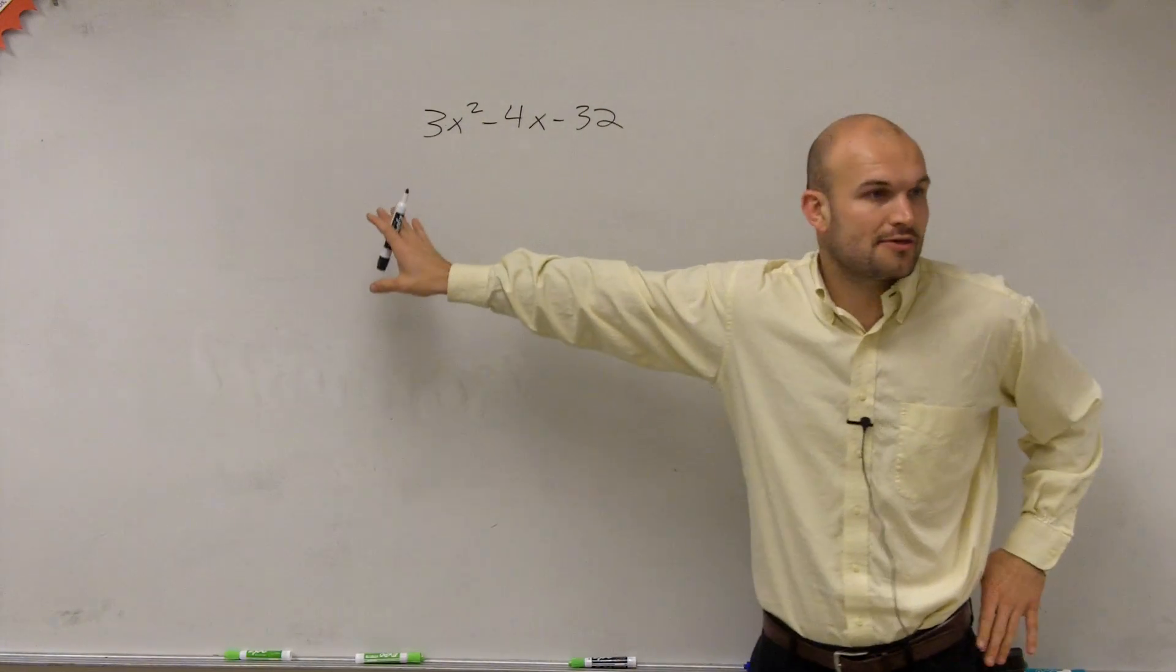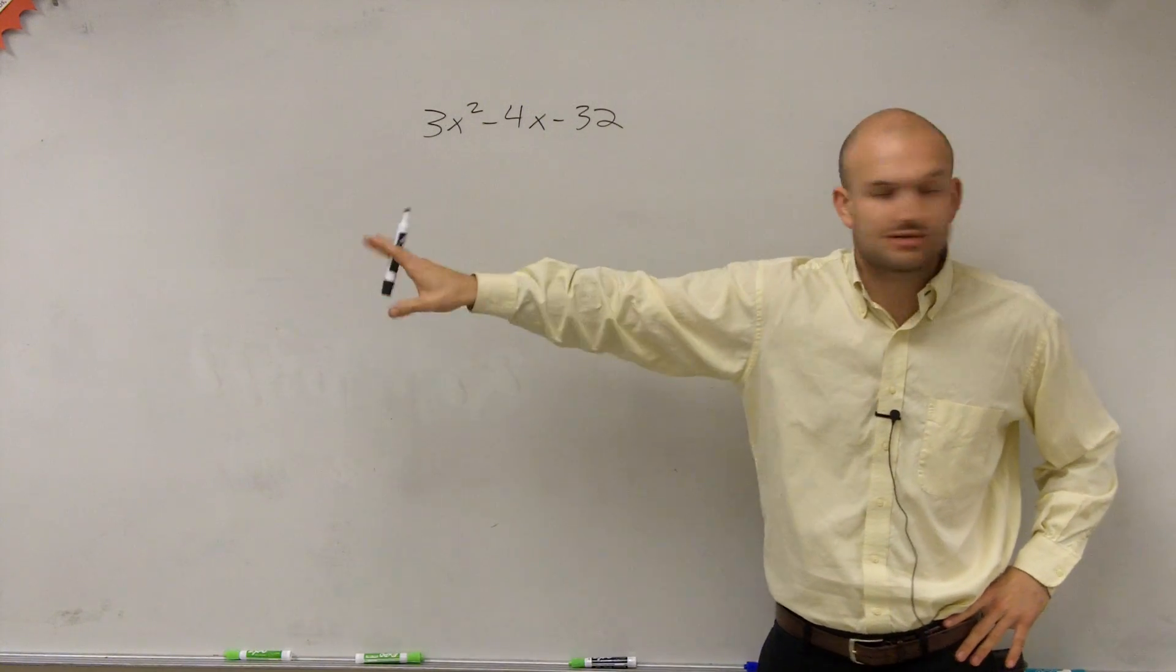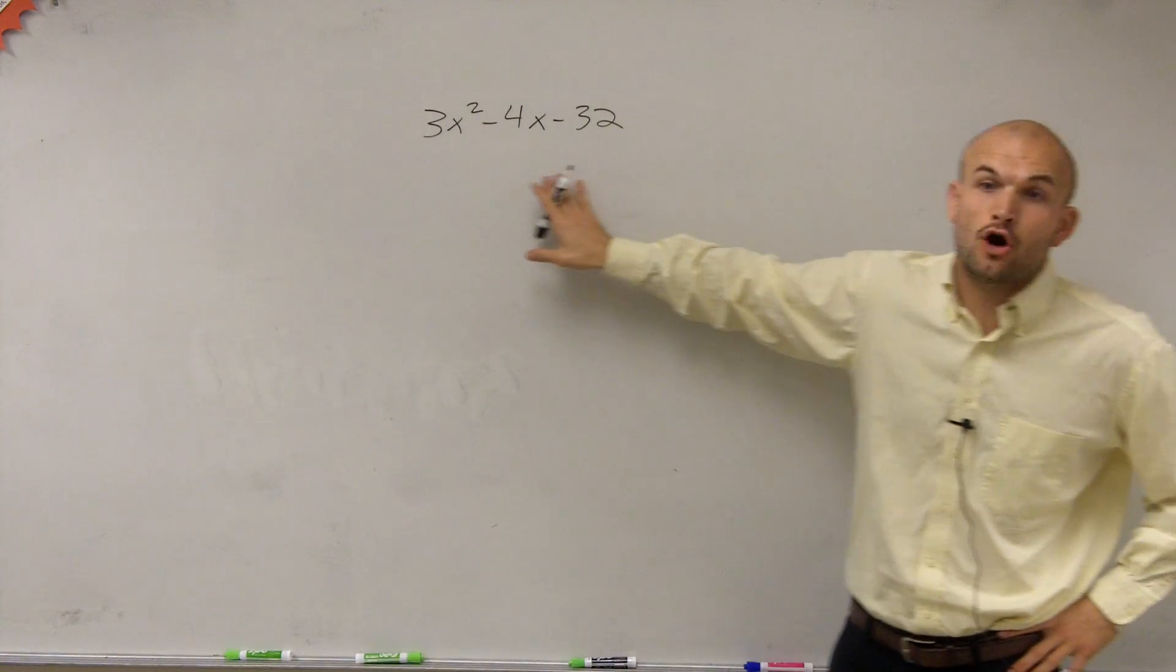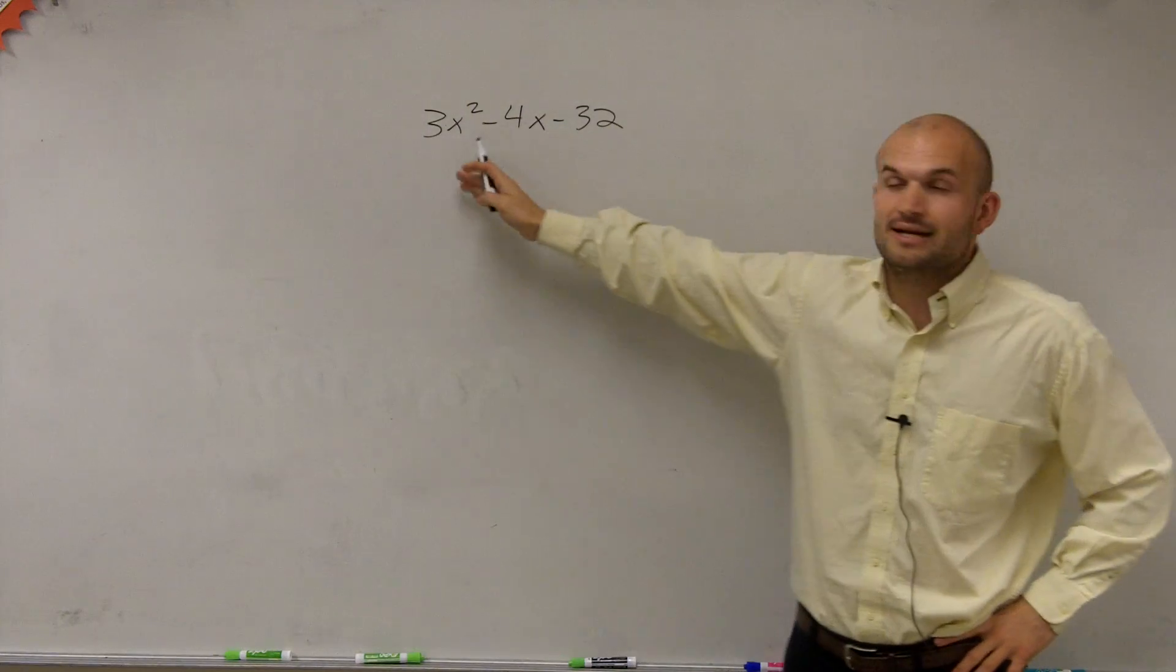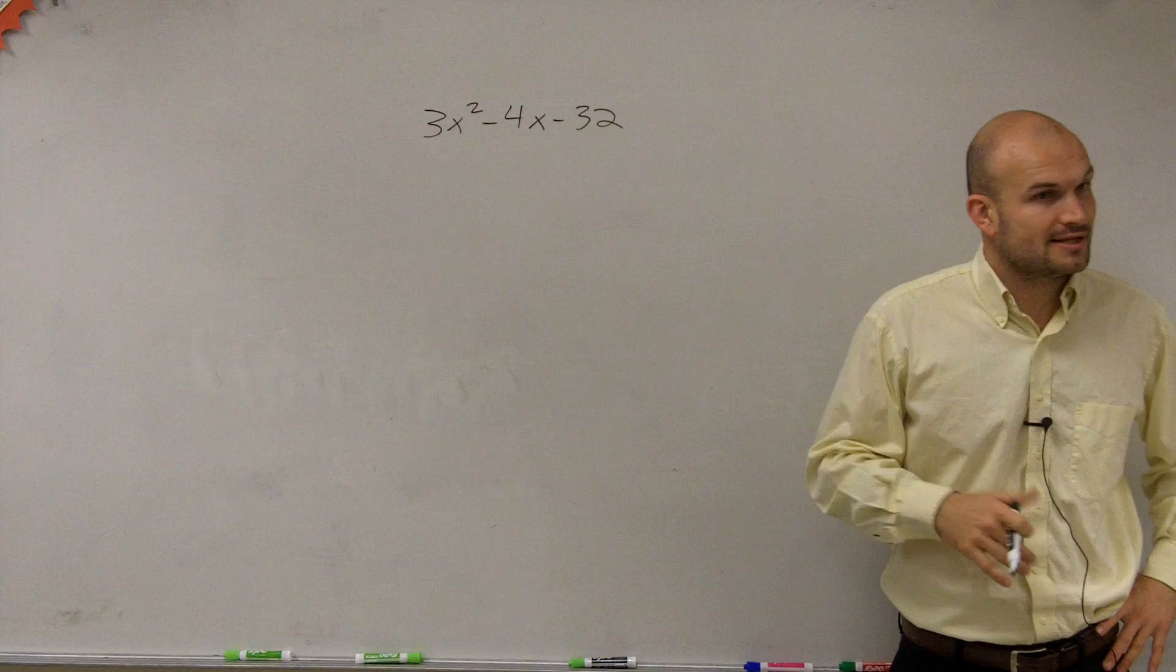So we notice that we have a 3 in it as our a in our quadratic form. And a lot of times we want to factor out that term, see if we can factor out a 3 out of all of these terms. Unfortunately, we cannot factor a 3 evenly out of the 4. So therefore, we're going to have to factor this using a different method.